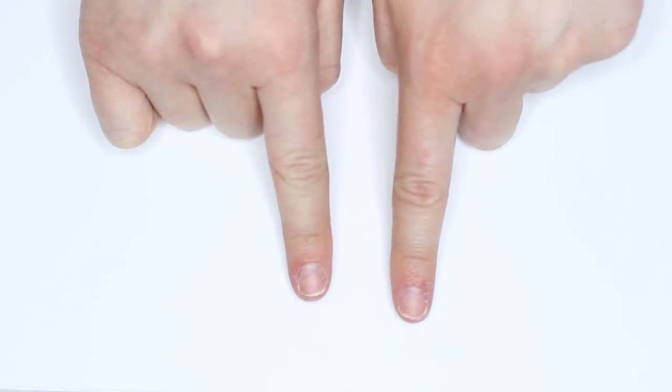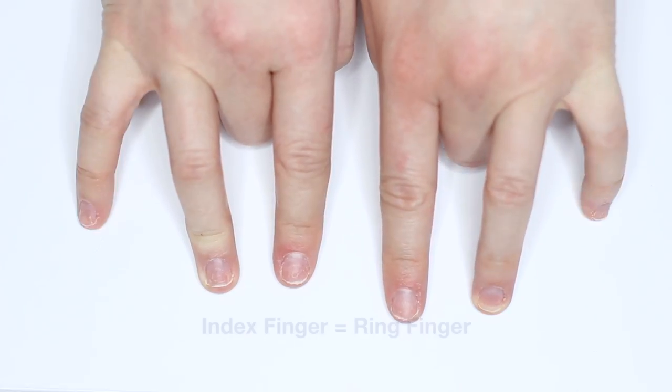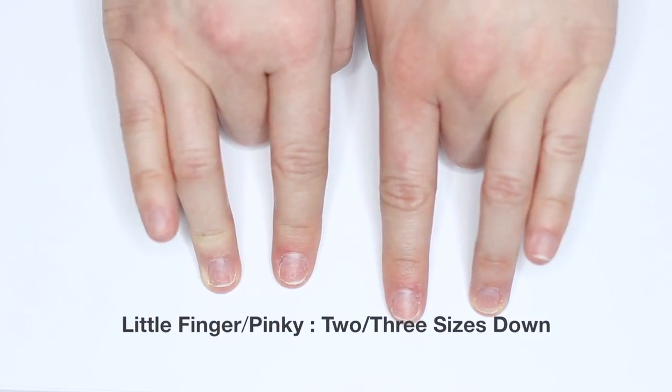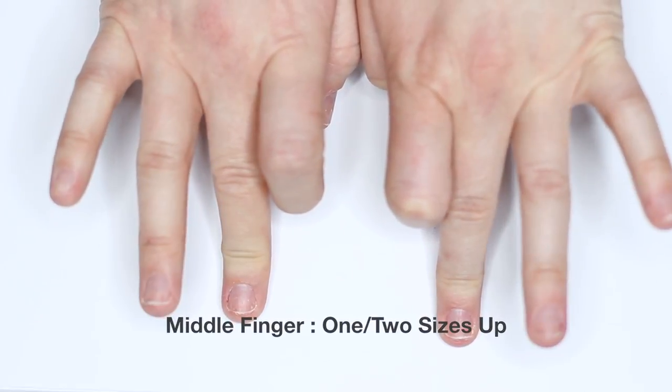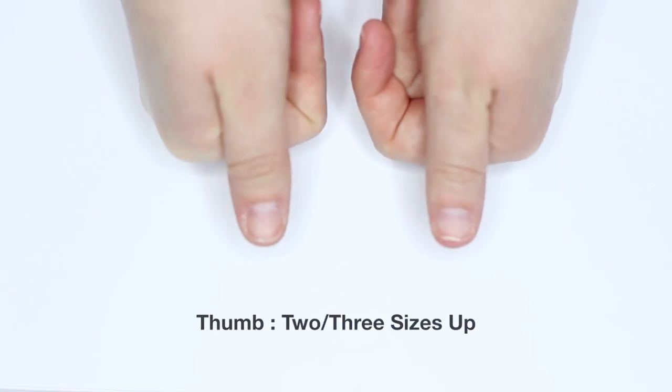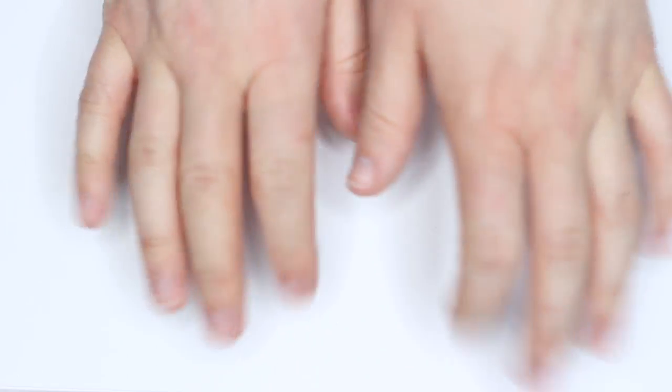The majority of people will have an index finger and a ring finger that are pretty much the same. Then your pinky will be about two sizes smaller than that. Your middle finger is usually one size up from your ring finger and then your thumb is usually two to three sizes bigger than your index finger. Does that make sense?